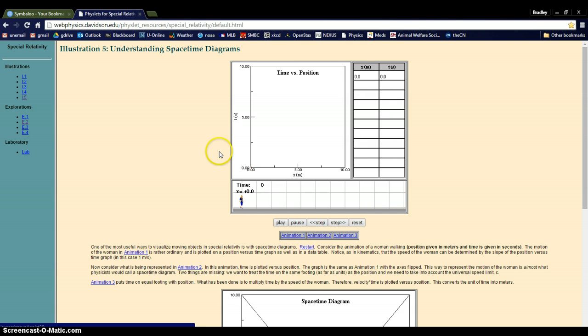Animation two is going to make a swap. So time is now on the y-axis, and position is on the x-axis. So we play this. The motion looks exactly the same, but the graph is just reversed, but you see it's still linear.